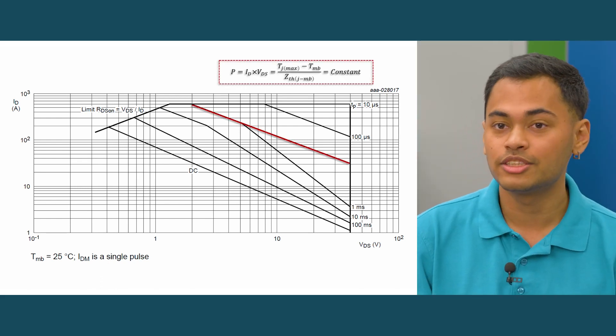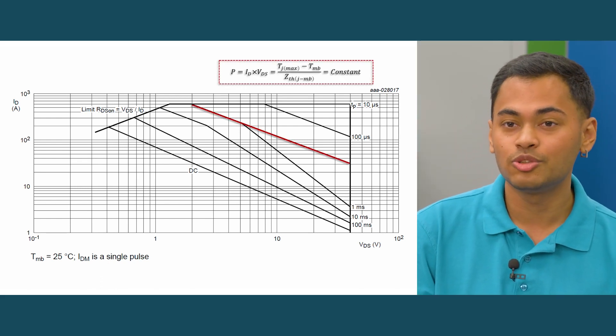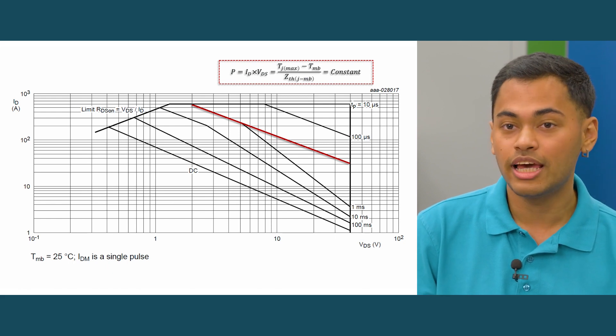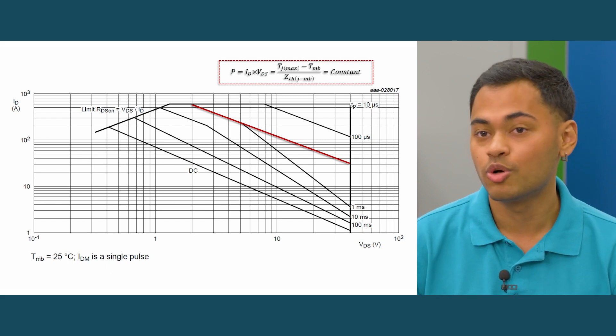If we were to estimate the SOA capability using the theoretical equation shown on the screen, we'd end up with a straight line that's shown in red.